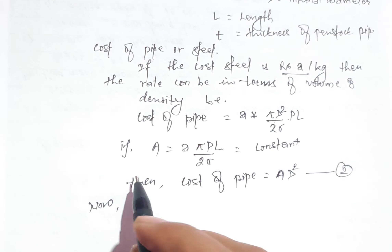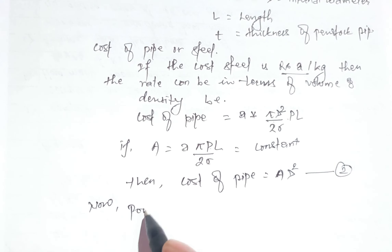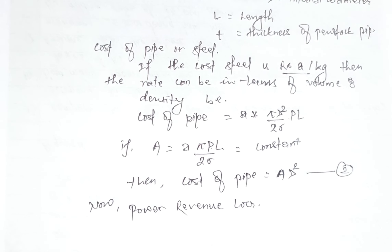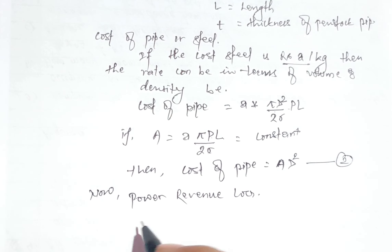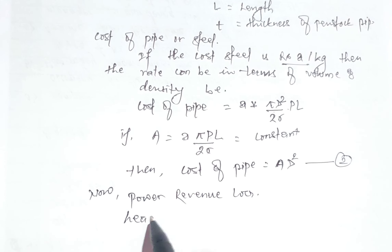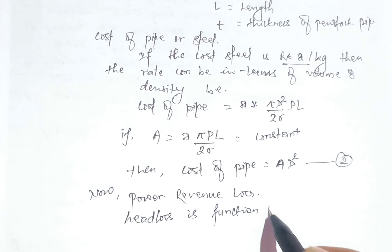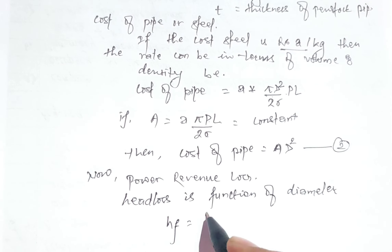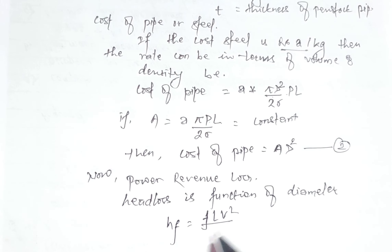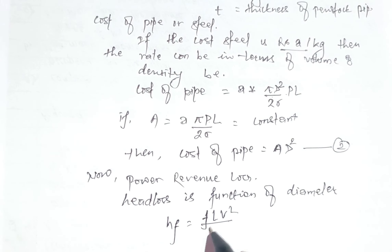Now let's calculate the power revenue loss. First, we will calculate the head loss, which is a function of diameter, using the formula h_f equals f·l·v² divided by 2·g·d. This can be expressed as 8·f·l·Q² divided by π²·g·d⁵. This is equation three.